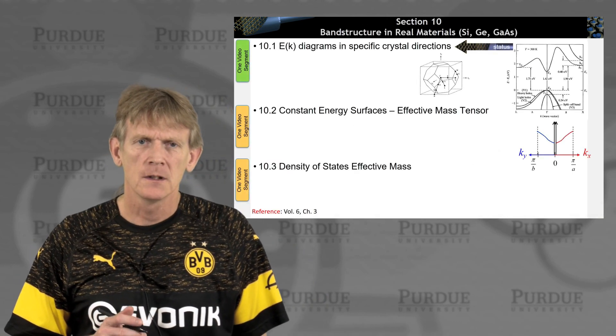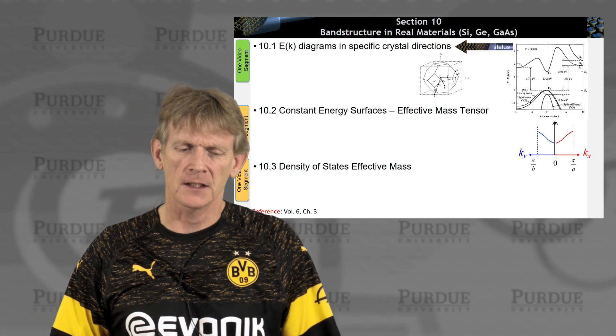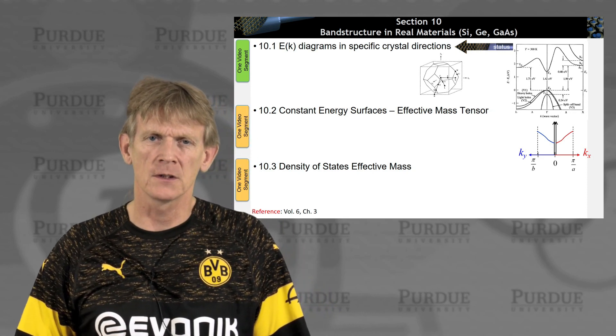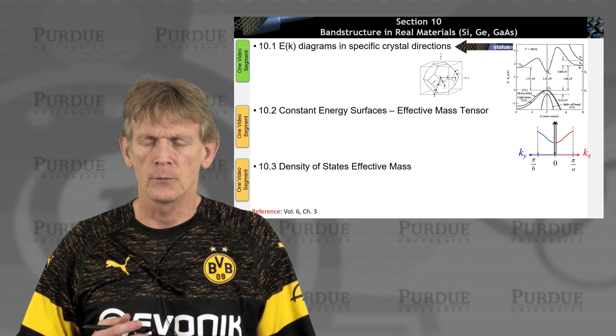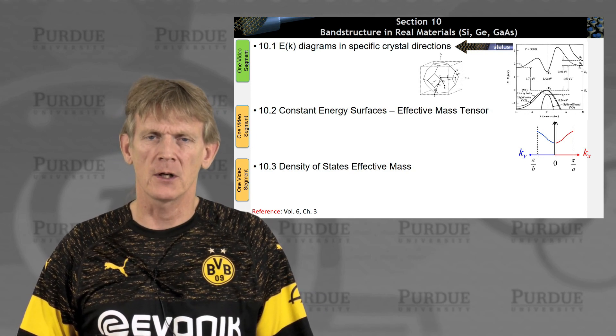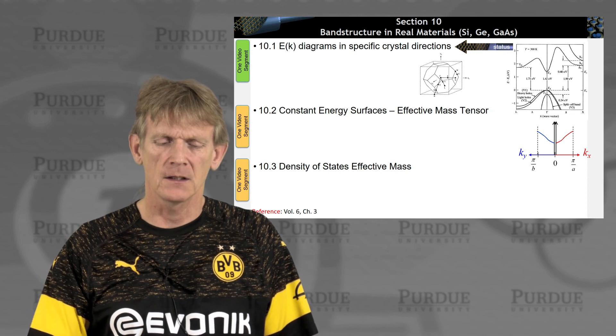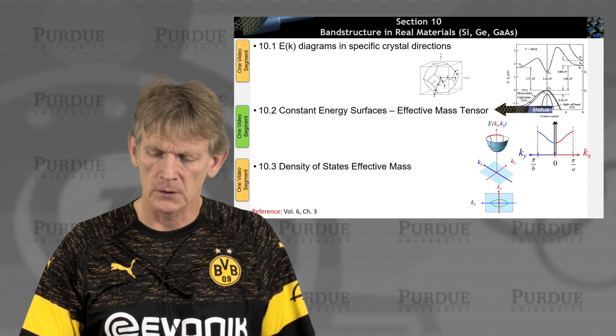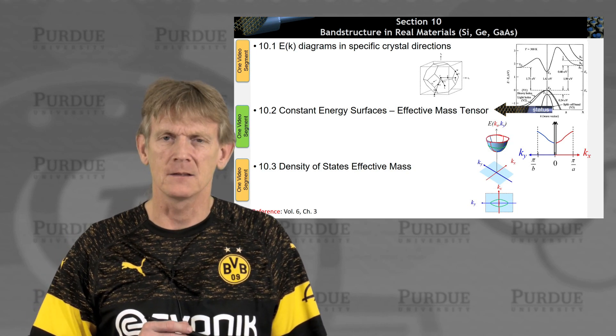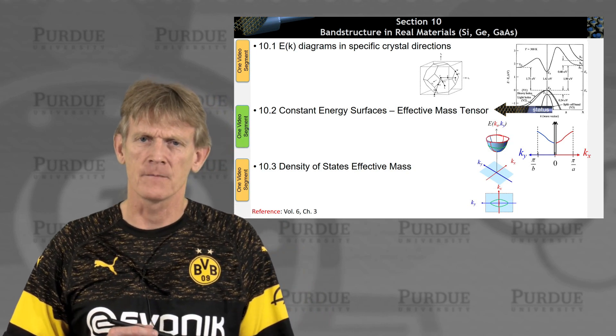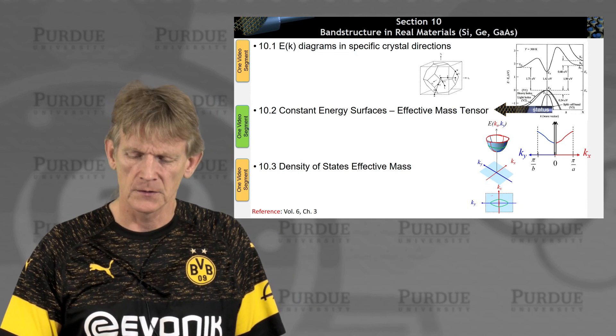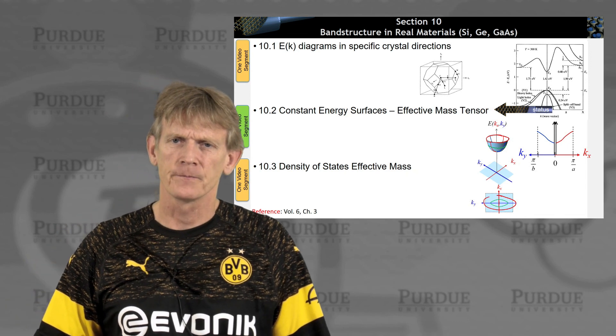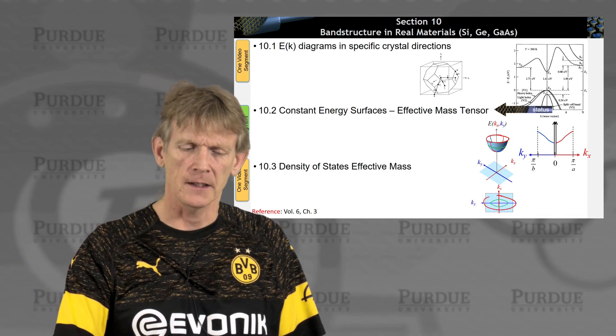All right. So we now have shown here in section 10.1 E-k diagrams of honest-to-goodness materials, and indicated some methods of how we might approximate these materials. And now we are going to look at constant energy surfaces that are similar to this, where we are going to slice through E-k diagrams at a constant energy and then plot them, say, here in a space like this. So that's going to be in the next section.